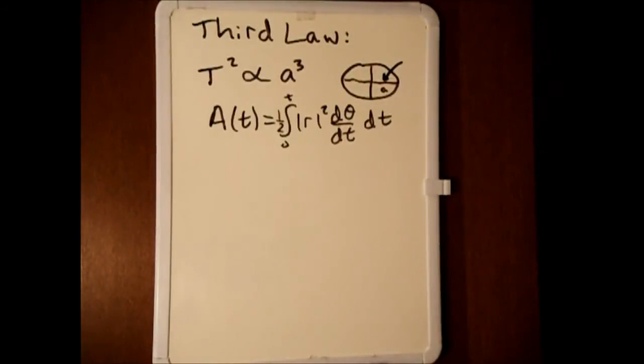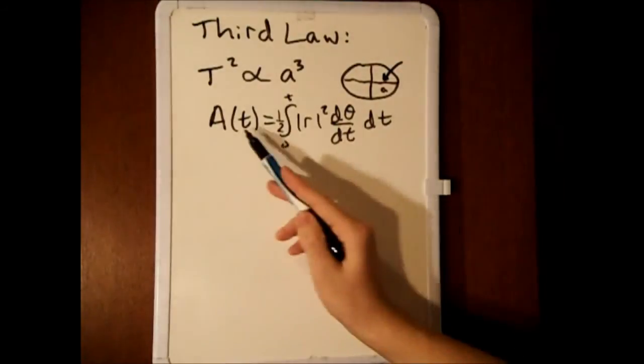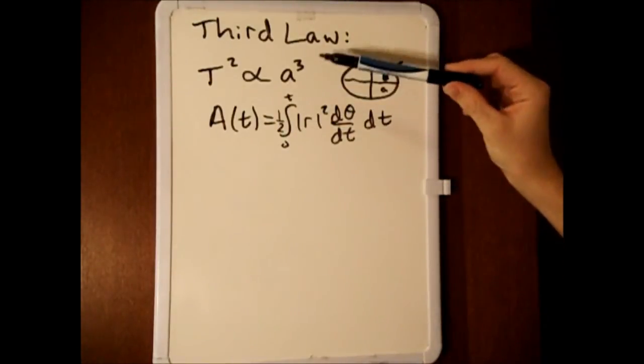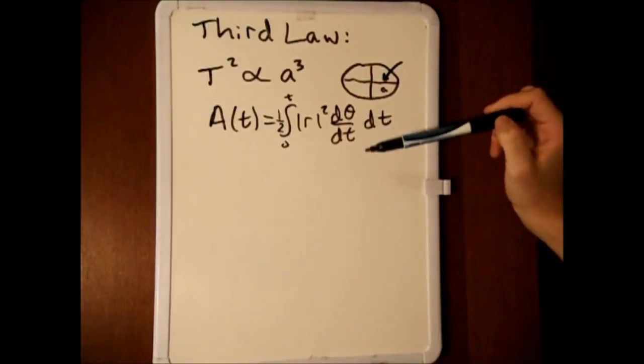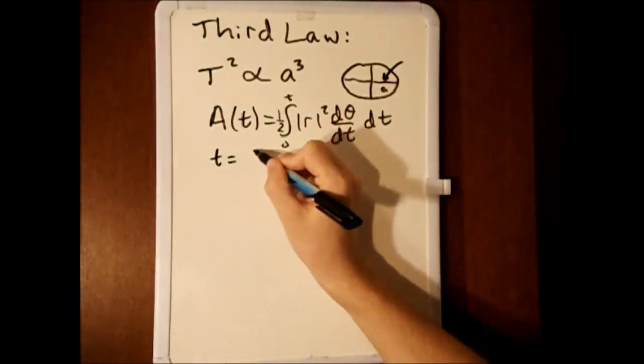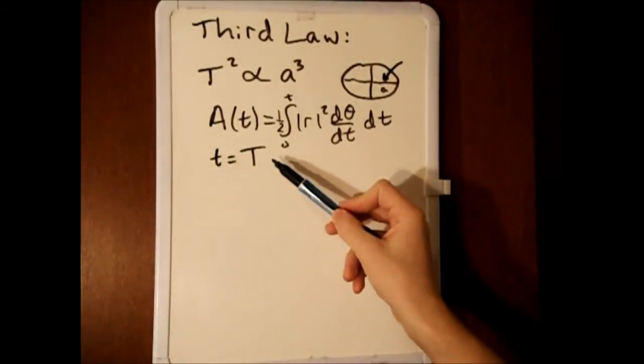Remember from our derivation of the second law that the area swept out at time t is equal to one-half the integral from 0 to t of r squared d theta by dt times dt. Let's substitute in t equals T for the orbital period of the planet.